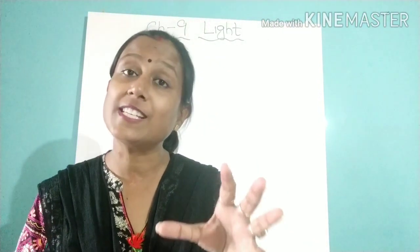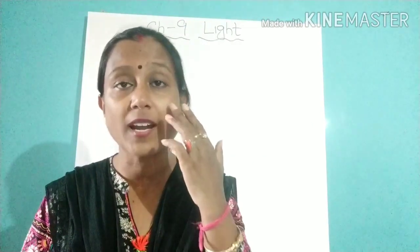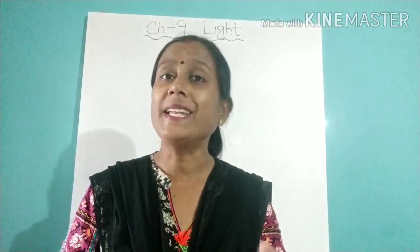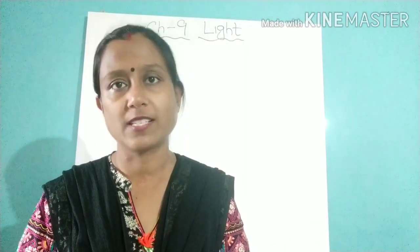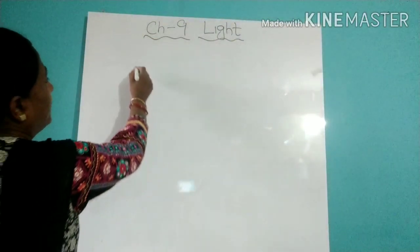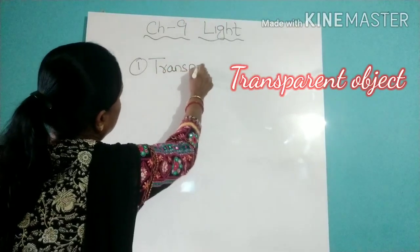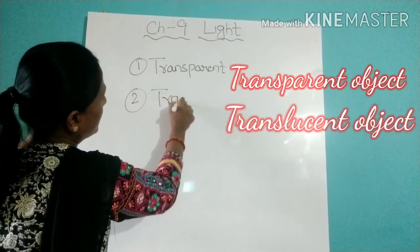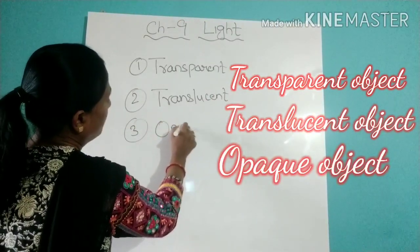So in this way, in the presence of light, when the reflected rays reach our eyes, we can see the object. Now, depending upon the movement of the light rays, there are three categories of objects: the first one is transparent object, the second one is translucent object, and the third is the opaque object.